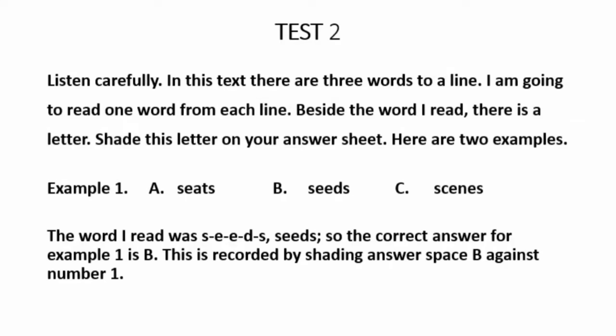Test 2. Listen carefully. In this test, there are three words to a line. I'm going to read one word from each line. Beside the word I read, there is a letter. Share this letter in your answer sheet. Here are two examples. Example 1. Seeds. The word I read was S-E-E-D-S, seeds. So the correct answer for example 1 is B. This is recorded by shading answer space B against number 1.